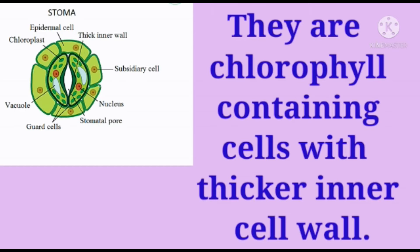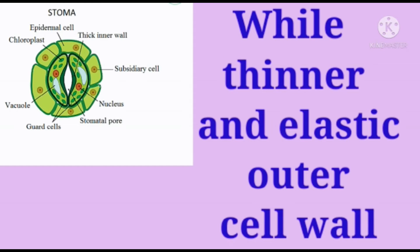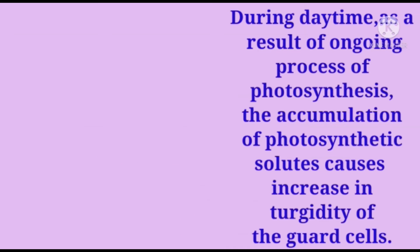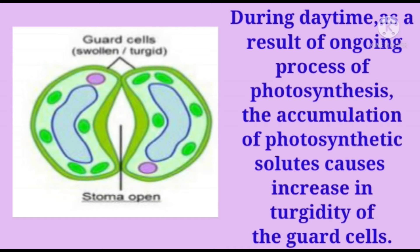Guard cells have a thicker inner cell wall and a thinner, elastic outer cell wall. The opening and closing of stomata depends upon the turgidity of the guard cells. During daytime, as a result of the ongoing process of photosynthesis, the accumulation of photosynthetic solutes causes an increase in turgidity of the guard cells.